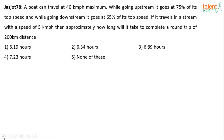This is on Boats and Streams. This was posted by Jas Chodh. A boat can travel at 40 km per hour maximum. While going upstream, it goes at 75% of its top speed. And while going downstream, it goes at 65% of its top speed.